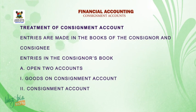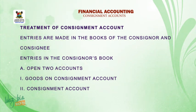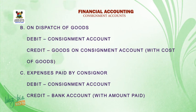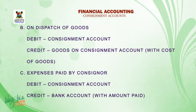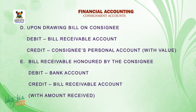Welcome back. Treatment of consignment accounts — entries are made in the books of the consignor and consignee. Entries in the consignor's book: open two accounts — one, goods on consignment account; and two, consignment account. B, on dispatch of goods: debit consignment account, credit goods on consignment account with cost of goods. C, expenses paid by consignor: debit consignment account, credit bank account with the amount paid. D, upon drawing a bill on consignment: debit bills receivable account, credit consignee personal account with value.